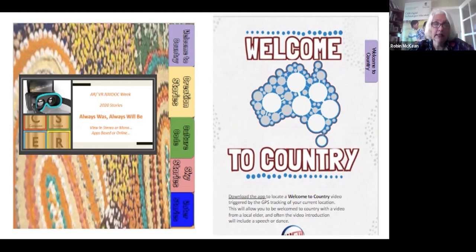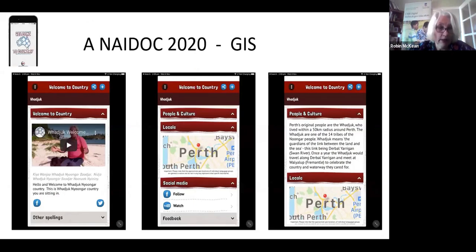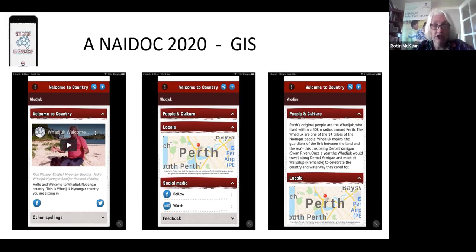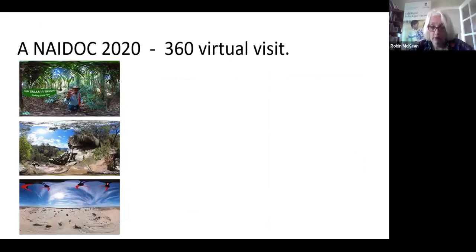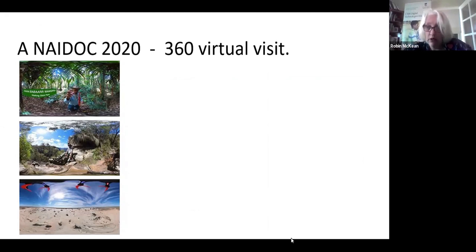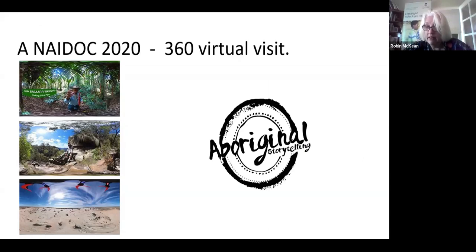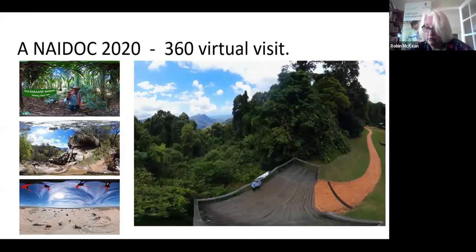The Welcome to Country app is something you can download from the digital workbook. It's GIS-triggered, so it will give you information on what is appropriate for your local area across Australia — a good app to have in your repertoire of resources. You could also undertake a NAIDOC 2020 360 virtual visit, courtesy of the National Parks and Ranges in New South Wales. They've got a Welcome to Country — these are 360 virtual visits that you can get into and have a good time. I'd like to share a story with you today.